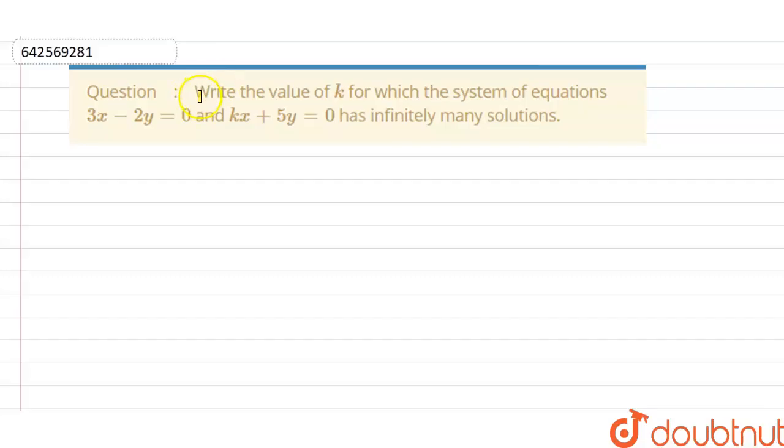Hello friends, here our question is: Write the value of k for which the system of equations 3x minus 2y is equal to 0 and kx plus 5y is equal to 0 has infinitely many solutions.